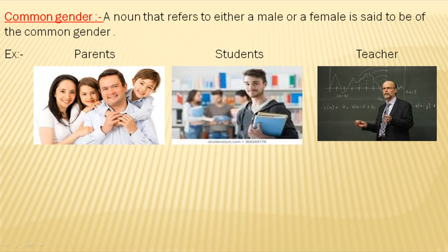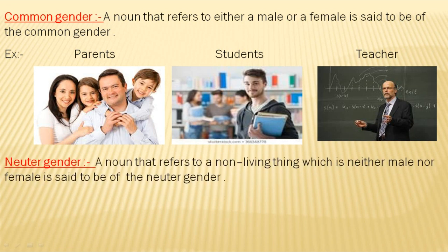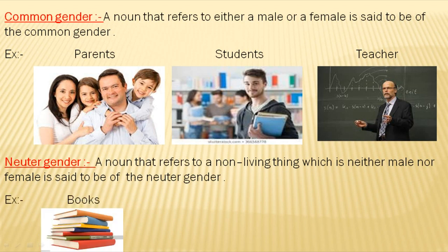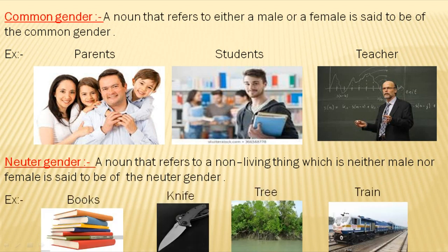Next, Neuter Gender. A noun that refers to a non-living thing which is neither male nor female is said to be of the neuter gender. Such as book, knife, tree, train, etc.